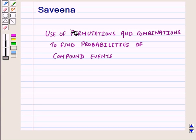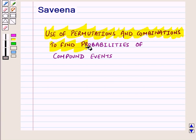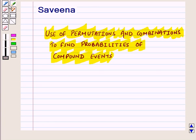Hello and welcome to the session. In this session we will discuss the use of permutations and combinations to find probabilities of compound events. Let us first look at the following definitions.